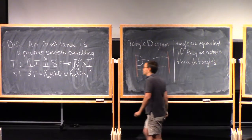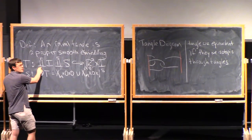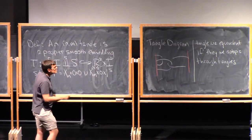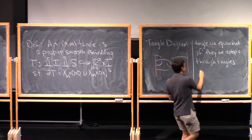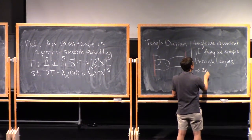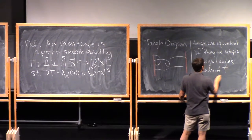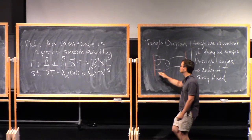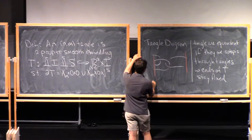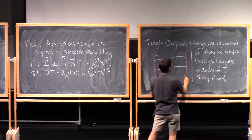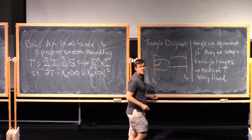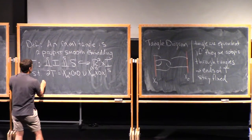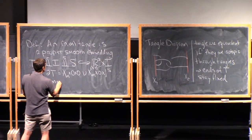We'll consider tangles to be equivalent if they're isotopic through tangles. Isotopic means I can find a map of this space times the interval into here, such that at each time slice I get a tangle. In particular, that means the ends of T stay fixed through the isotopy, because my requirement is that the ends of the tangle always lie on this set. So over here I had x_4 as these four points, and x_2 as these two points. The ends never move under the isotopy. And this number r is necessarily (m+n)/2.